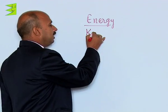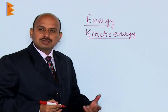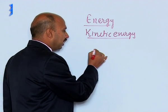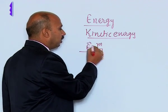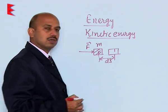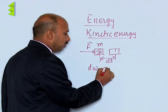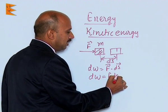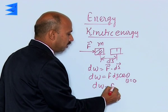Let us take kinetic energy. The energy possessed by the body by virtue of its motion is known as kinetic energy. Suppose any body of mass m has a force applied to it and displaces by ds. Then the work done by this force is dW = F · ds, and since theta is equal to 0, dW = F ds.